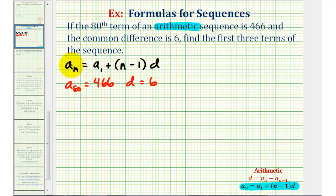If we let a sub n be equal to a sub 80, we can substitute 466 for a sub n as long as n is equal to 80. So 466 must equal a sub one plus n minus one, again n is 80, and we know the common difference d is equal to six.